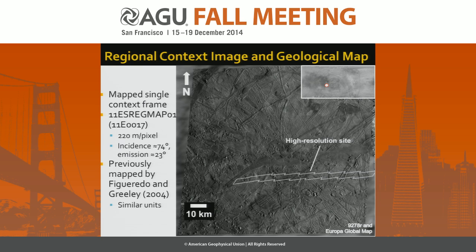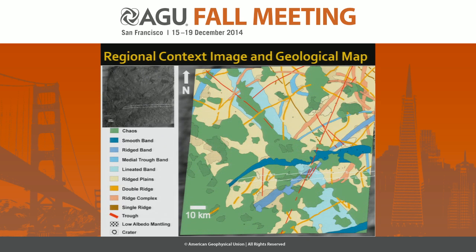This area was previously mapped by Figueredo and Greeley in their 2004 paper. When we mapped it, we used pretty similar units but with some differences. Our geological map shows a lot going on, but important things crossing through the high resolution area include areas of chaos in green, ridged plains as one unit in yellow, and different sorts of bands in blue. One other important feature is the low albedo mantling, shown in black stipple, which will come into play when we talk about the chaos region.